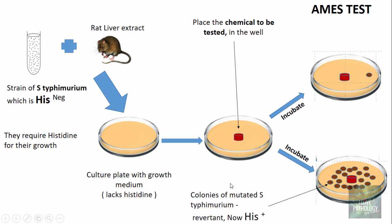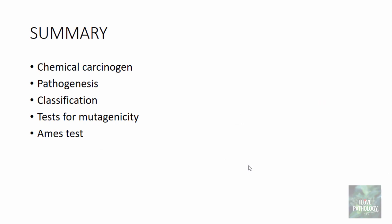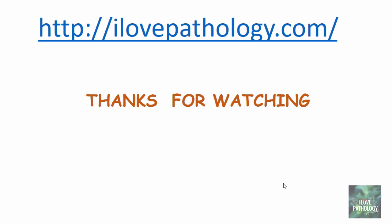This is how you perform a test for mutagenicity — this is called the Ames test. That completes this short tutorial on chemical carcinogenesis, where we understood what a chemical carcinogen means, the multi-step pathogenesis of chemical carcinogenesis, and the Ames test for mutagenicity. Thank you very much for watching. Please visit ilowpathology.com, and don't forget to like, comment, subscribe, and share.